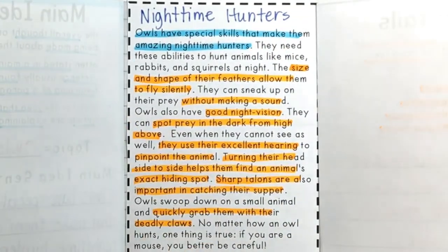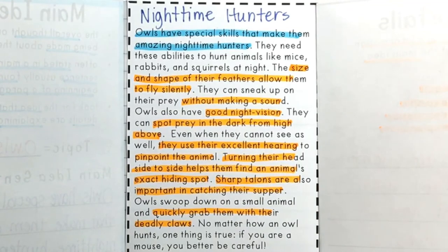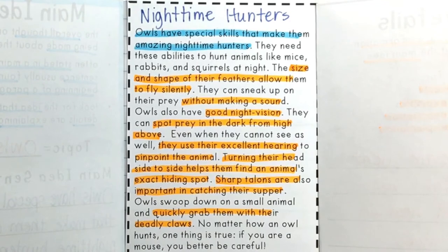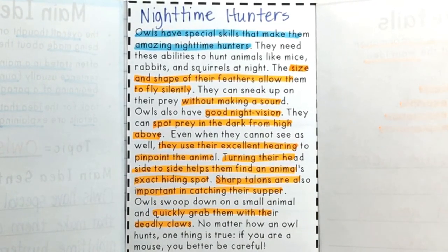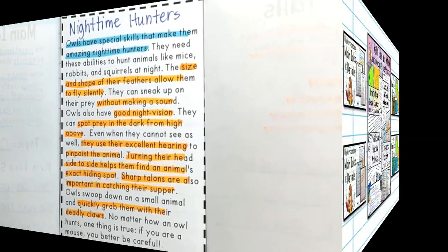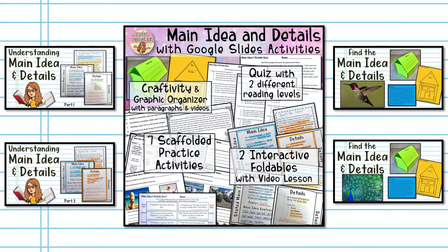From now on, when you start reading something, take a look at the titles and start thinking about what the paragraph is about. Try to notice whether there's a main idea sentence helping you understand the paragraph better. Thanks so much for joining me — I hope you enjoyed this lesson. Make sure you check out my next video on main idea and click the links in the description box below for other main idea activities and videos. Thanks for watching!